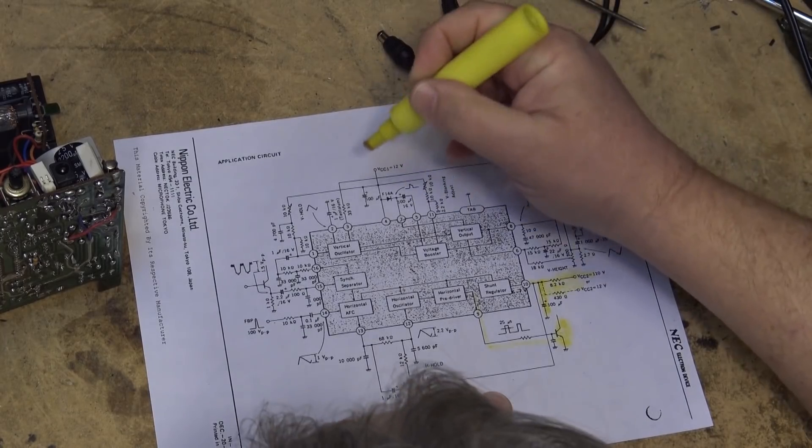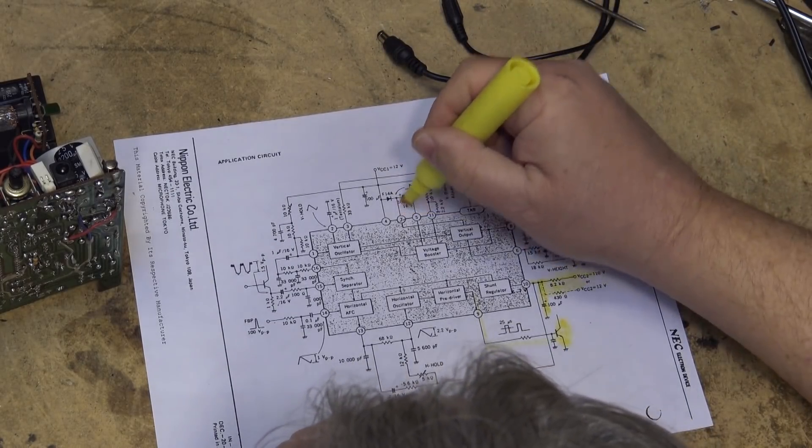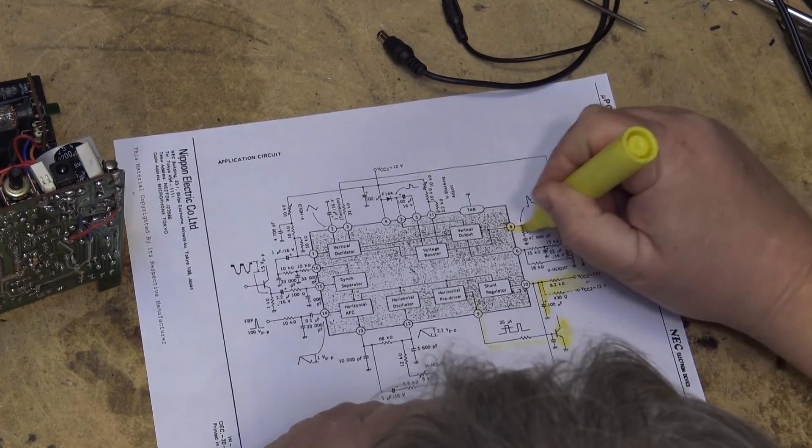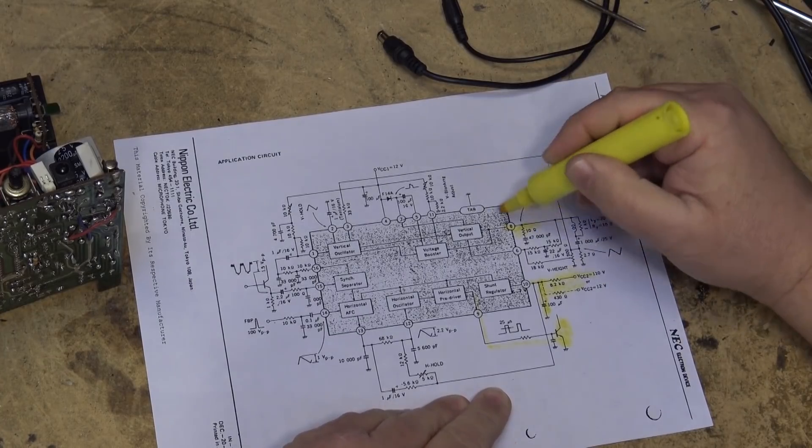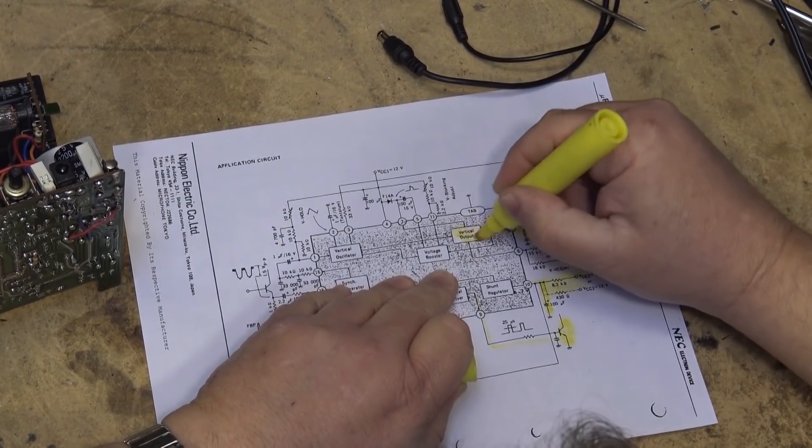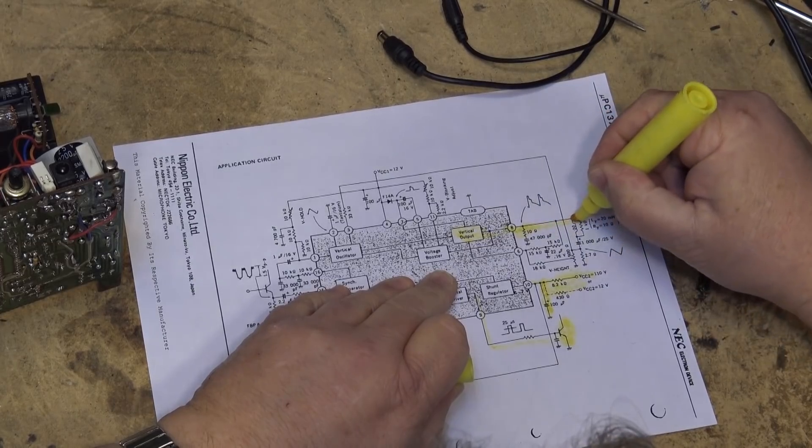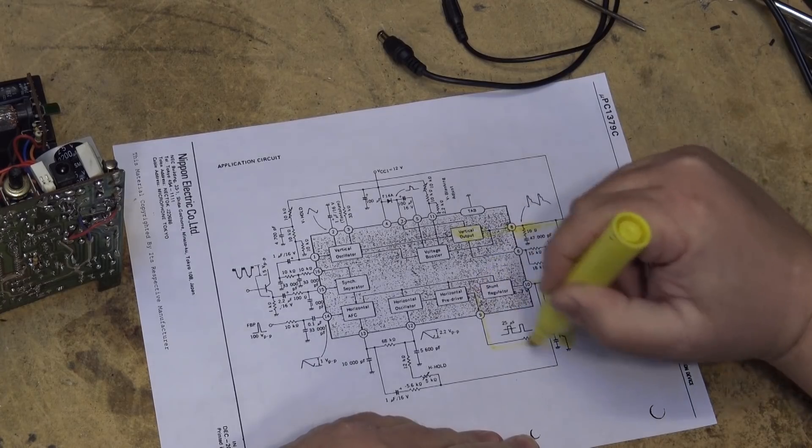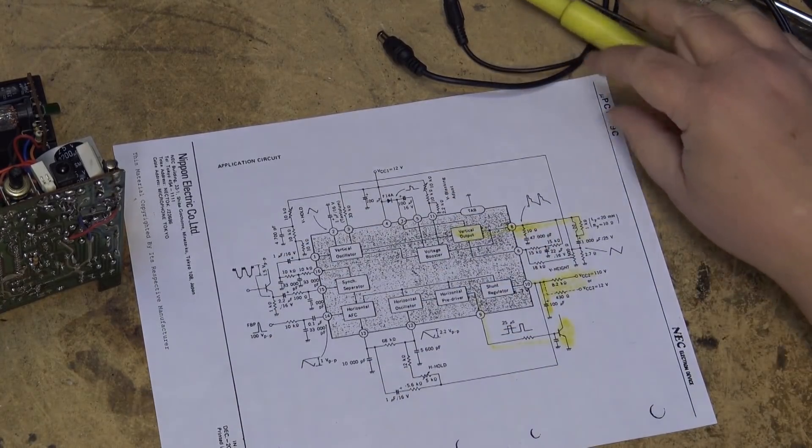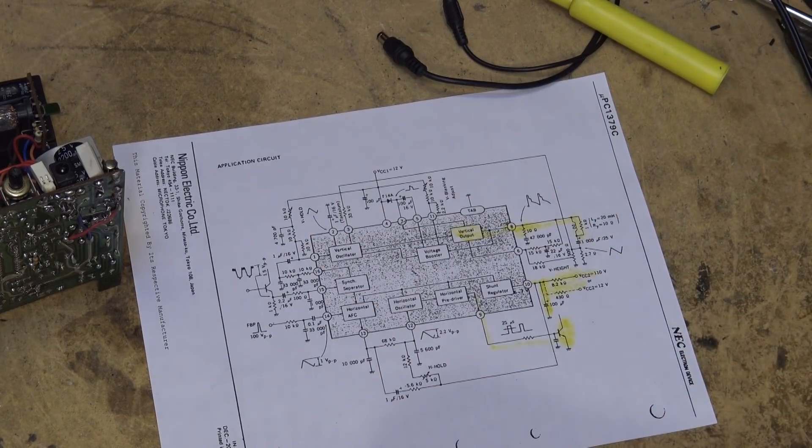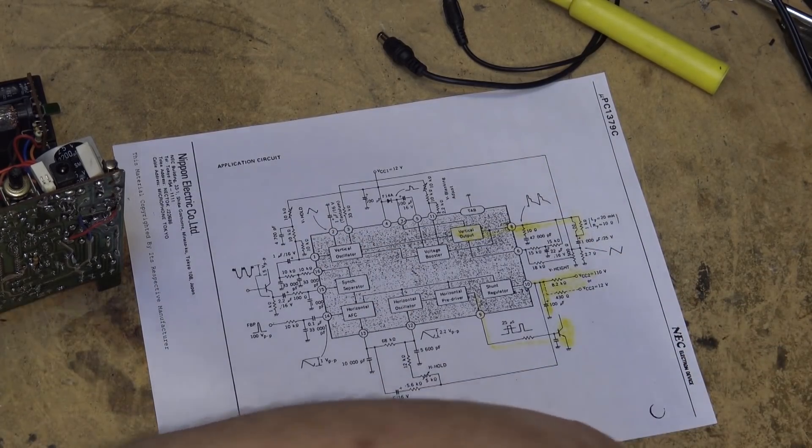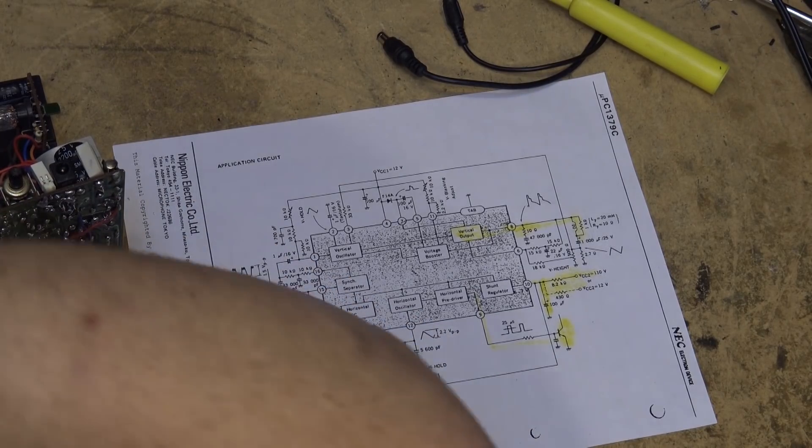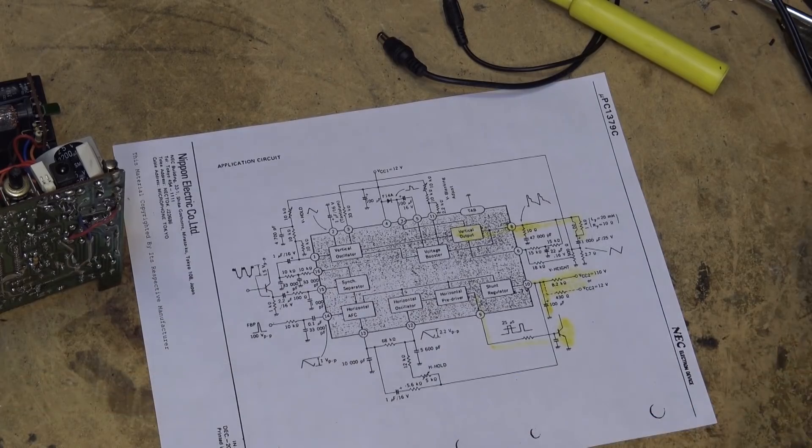Our vertical output is on pin number 8. This is our vertical output which drives the yoke. This has the vertical output circuitry all built right in, so this drives the yoke directly. Horizontal drive drives the horizontal output transistor. I wanted the pin out just so that I could see whether I'm getting signals and voltage going in. So let's grab a meter and we'll do some voltage measurement.